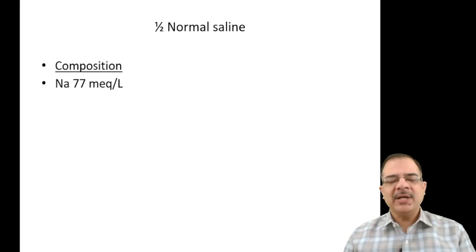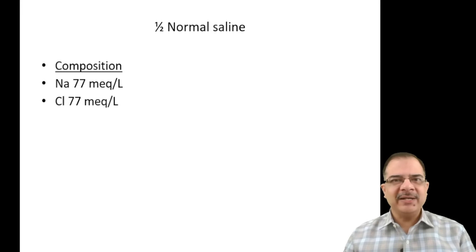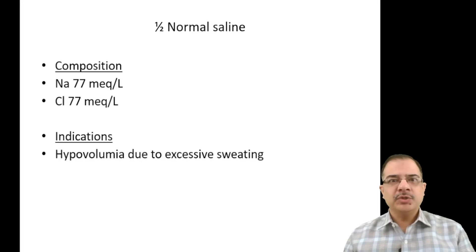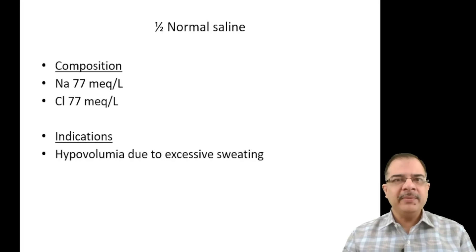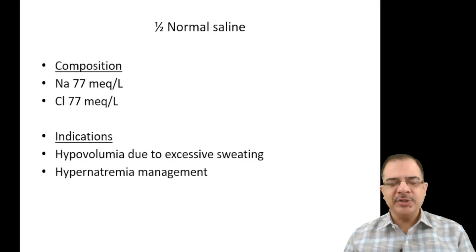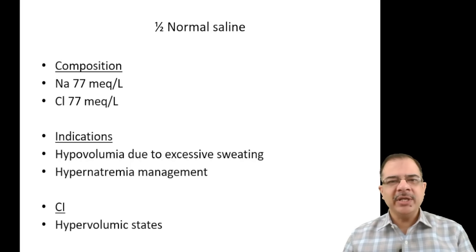Half normal saline has exactly half the concentration — 77 mEq/L each of sodium and chloride. Main indications are hypovolemia due to excessive sweating (such as in marathon runners), since sweat is hypotonic with less sodium and more water, and hypernatremia management because it dilutes sodium. Contraindication is hypervolemic states, as it provides free water.